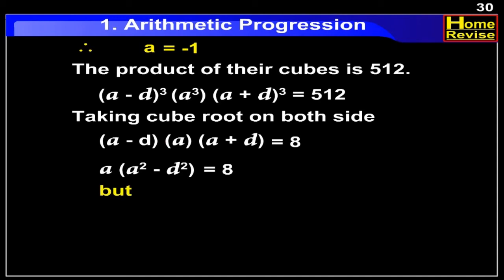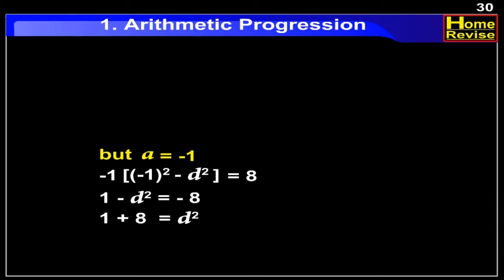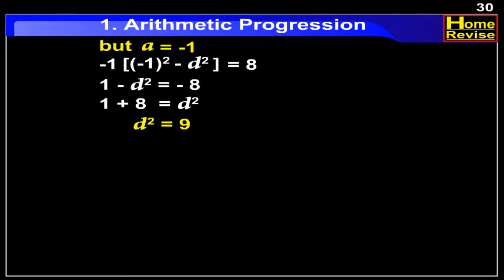But we know that A is equal to minus 1. Therefore, putting this value: minus 1 into (1 minus D square) is equal to 8. After removing the brackets, we have 1 minus D square is equal to minus 8. Therefore, 1 plus 8 is equal to D square. Therefore, D square is equal to 9. Taking square root on both sides, D is equal to plus or minus 3.